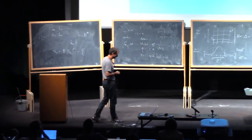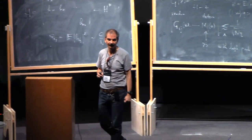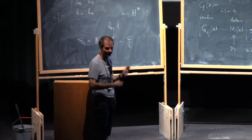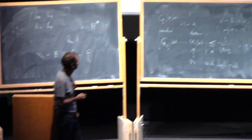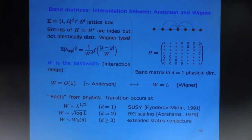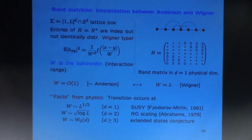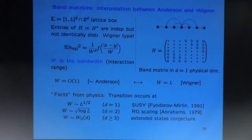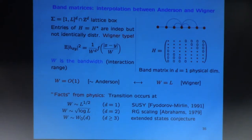There is a famous model in between — I think Maria Shcherbina was talking about it last week — which interpolates between these two extremes. These are called the random band matrices, interpolating between Anderson and Wigner. Here is the matrix: it's a band matrix which still has lots of zeros, but instead of being just a tridiagonal matrix, it has a bandwidth of size W, which is a parameter of the model. In the red region around the diagonal, you put in independent random variables — it looks like a Wigner matrix there, and outside it's zero like a random Schrödinger.